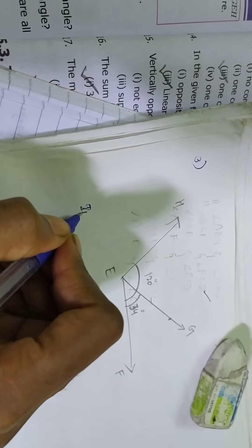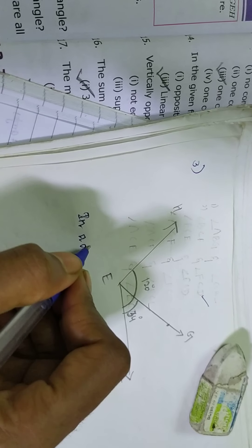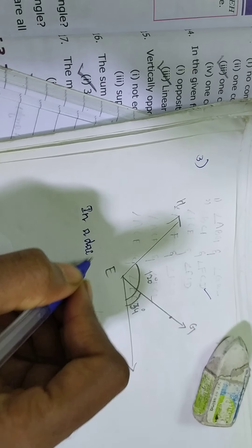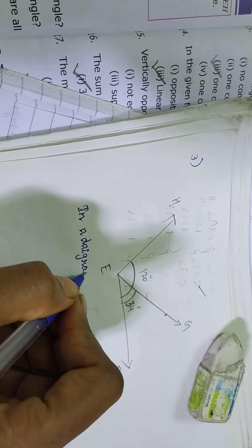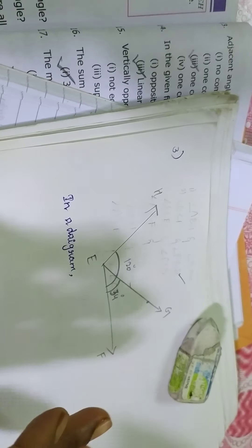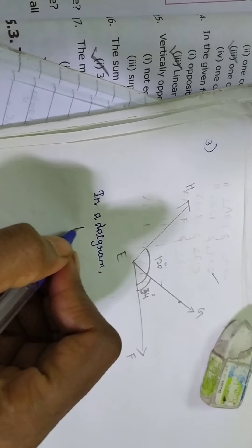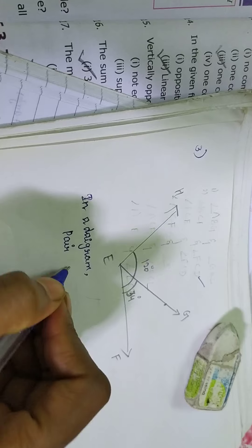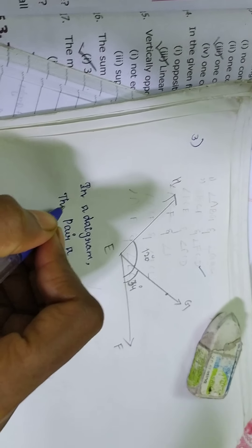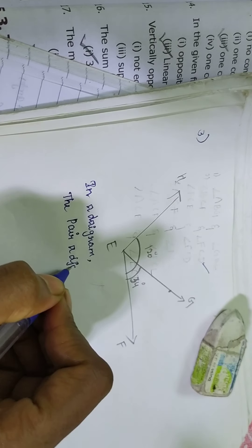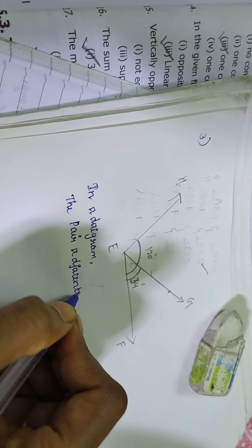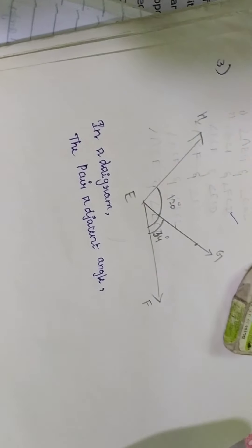So what they are given in this place? In a diagram, what they are given? What are the adjacent angles? A pair of adjacent. So I am taking a pair of. It will be easy to find out my angle. So what is my pair of adjacent angles? I am going to write.